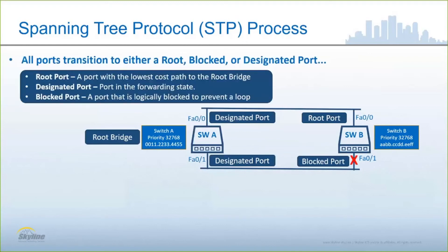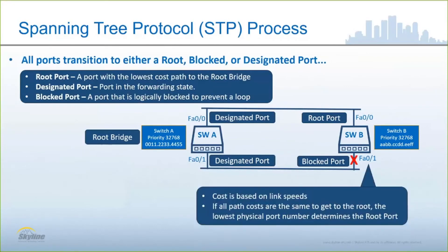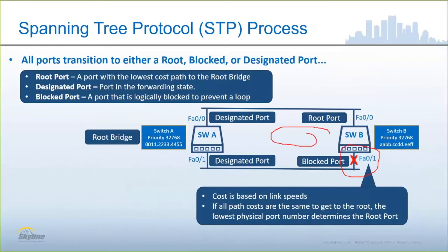There is a whole process of blocking, listening, learning, and convergence as switches negotiate who the root bridge will be. Switch A becomes the root bridge because it has the lowest concatenated Bridge ID. Switch B then determines its topological relationship with switch A — it has two interfaces connected to switch A — so it selects one as the root port and leaves the other in a blocked state, which is what prevents broadcast storms between switch A and switch B.